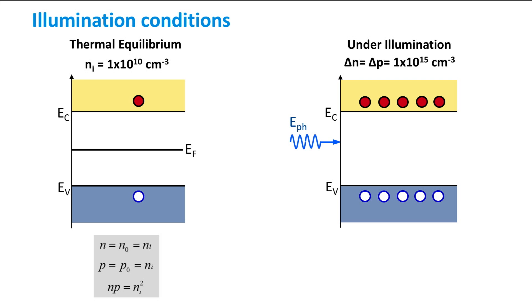But how does this affect the Fermi level? Let's draw the Fermi level of the intrinsic semiconductor at thermal equilibrium. The Fermi level is used to determine the concentration of both electrons and holes at thermal equilibrium. When illuminated, many more electrons and holes are present in the material. By moving the Fermi level closer to one of the band edges, we would correctly determine only one type of carrier, not both.